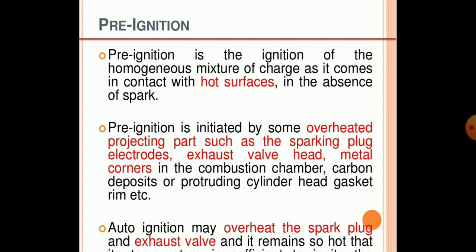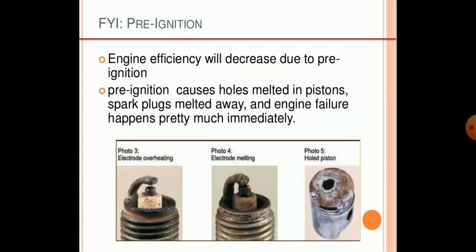Pre-ignition is initiated by some overheated projecting parts such as spark plugs, electrodes, exhaust valves, and metallic corners of the combustion chamber. In the combustion chamber, carbon deposits on the cylinder head, gasket, and rim can also cause this. Auto-ignition may overheat the spark plug and exhaust valve, which remains so hot that the temperature is sufficient to ignite the charge.